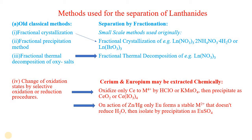Fractional crystallization is a process in which crystallization of different substances present in a mixture is done one by one on the basis of difference in solubility. For example, it is done for lanthanide nitrates·2NH₄NO₃·4H₂O or lanthanum bromates.